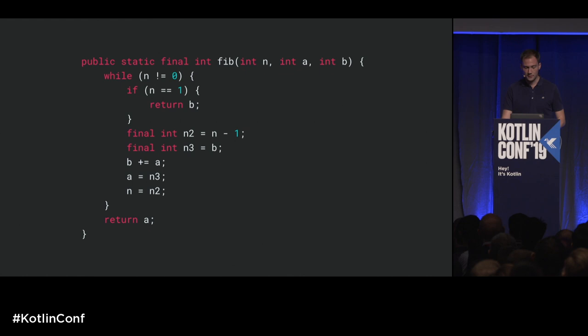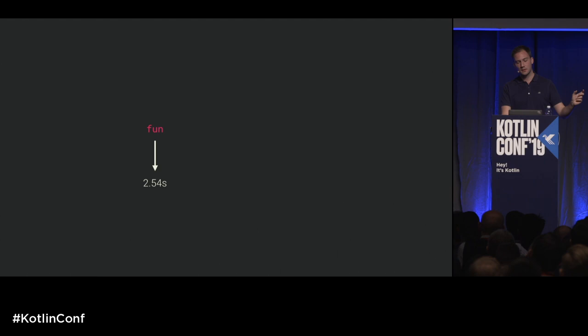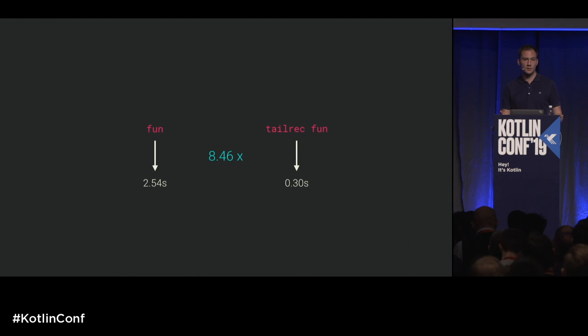How powerful is it? Here's a little benchmark. The original recursive function takes two and a half seconds. By just adding tailrec to the declaration, it now takes only 0.3 seconds — an 8.5x speedup by just adding that one keyword.